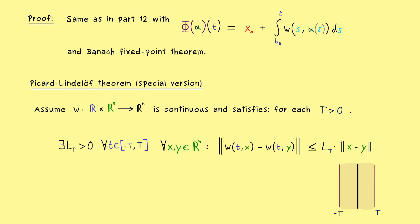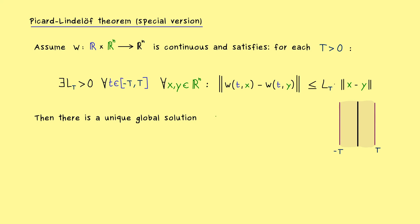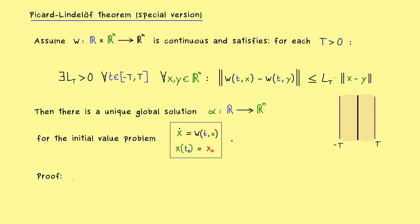Under this stronger condition, the result is really nice: we get a unique global solution for the initial value problem, defined on the whole real line R. This holds for our initial value problem with a fixed x₀. This is something the original Picard-Lindelöf theorem cannot tell us. For the proof, we set t₀ to 0, which is not really a restriction since we can always shift the problem to the origin in time.